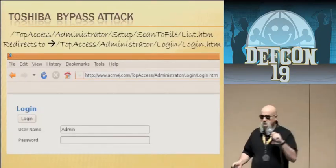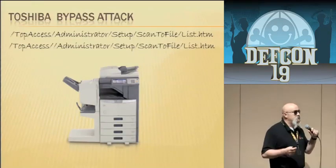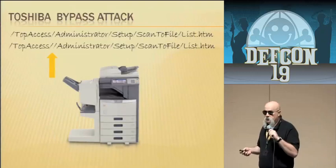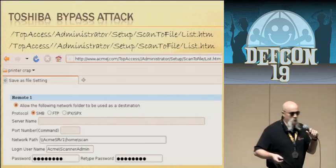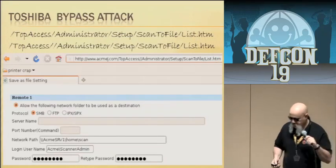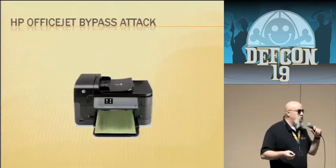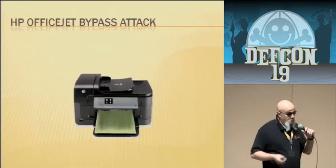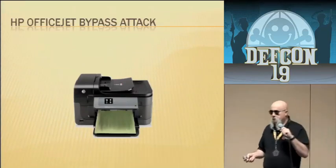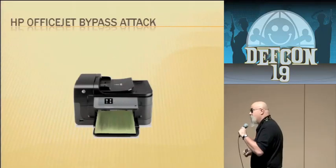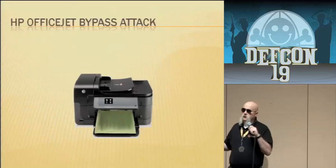The first one is the bypass attack — the ability to bypass authentication by passing various forms of data in the actual URL. We have two examples today: Toshiba and HP. On the Toshiba, a specific URL would give us access to the scan-to-file configuration page. If you enter this URL in, the Toshiba redirects you to a logon page. The default password is 123456 — so you know what it is for all the E-Studio Toshibas.